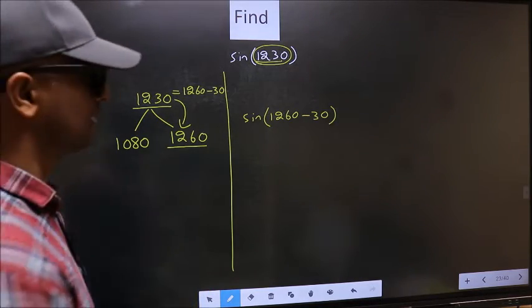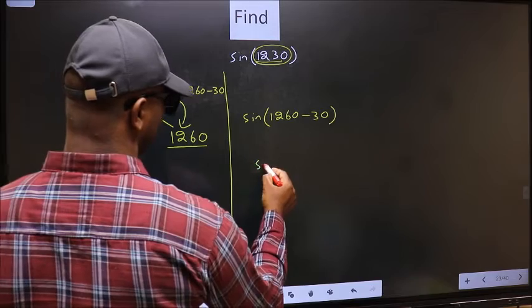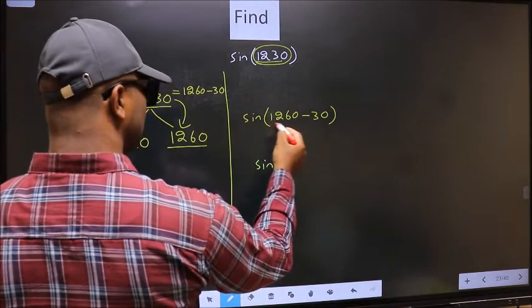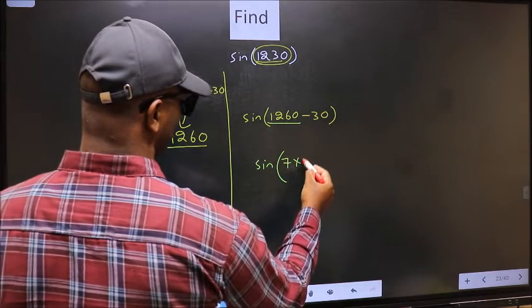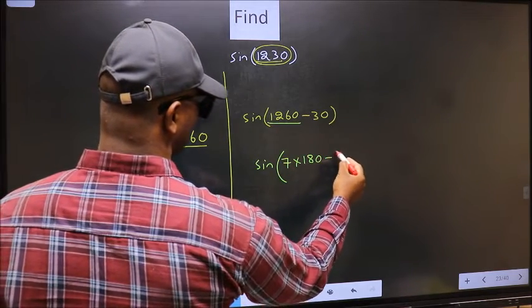Next. Now in place of 1260 we should write 7 times 180 minus 30.